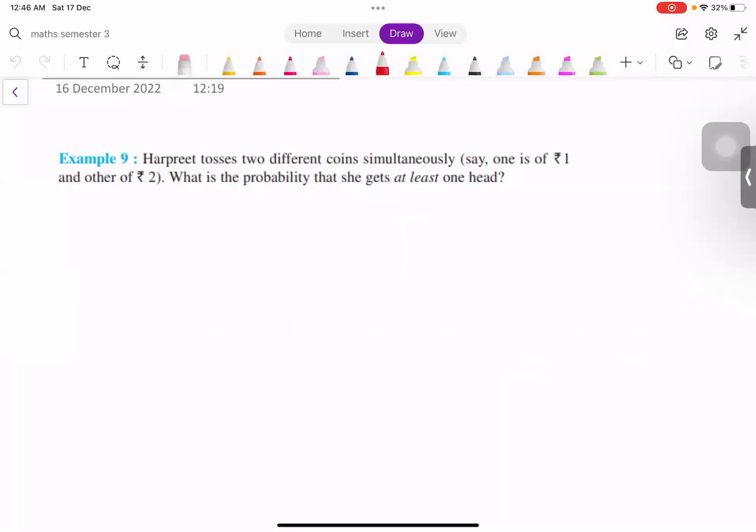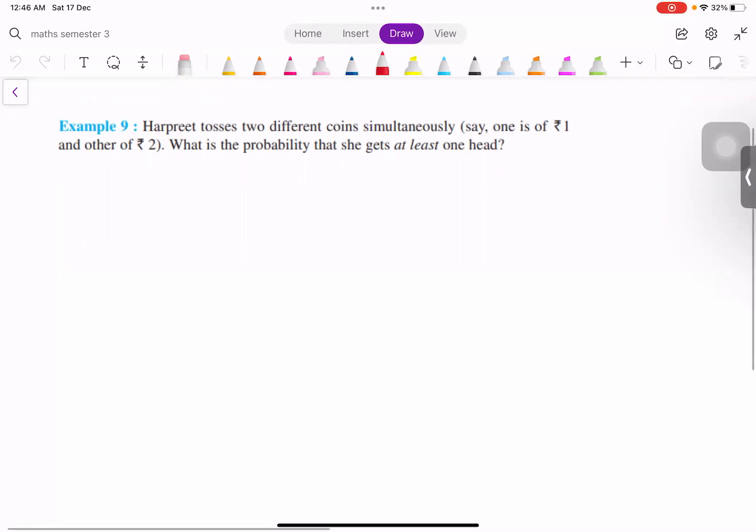Hello everyone, welcome to our channel. Today we are going to solve Example 9 of the chapter Probability for class 10th. This example says: Harpreet tosses two different coins simultaneously. What is the probability that she gets at least one head?